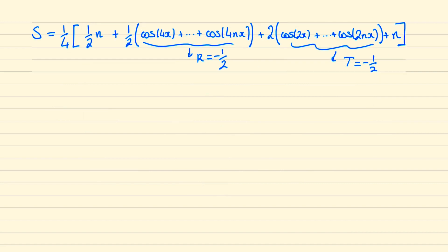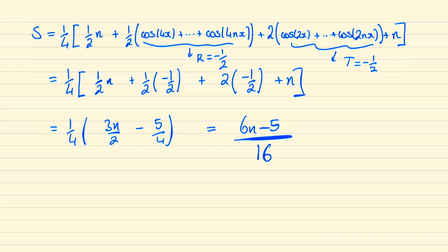And so when we sub these terms into s, we have the following which simplifies to become a quarter of 3n over 2 minus 5 over 4, which we can then write as 6n minus 5 all over 16. And so we're done.